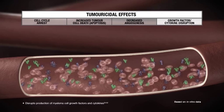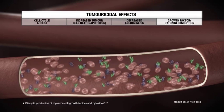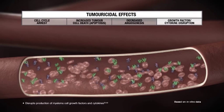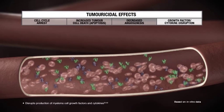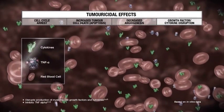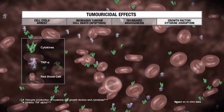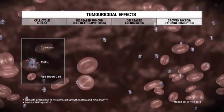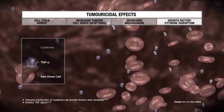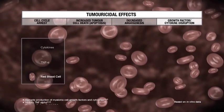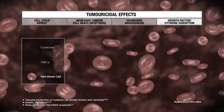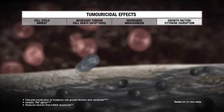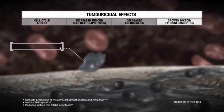Revlimid also disrupts the production of growth factors and cytokines that are essential for myeloma cell survival, proliferation, migration, and attachment to stromal cells. In vitro experiments have shown that Revlimid strongly inhibits the production of cytokines, in particular tumour necrosis factor alpha, which has been implicated in the pathogenesis of hematologic malignancies. Revlimid also reduces levels of factors that inhibit apoptosis, regulate proliferation of myeloma cells, and promote survival of myeloma cells.